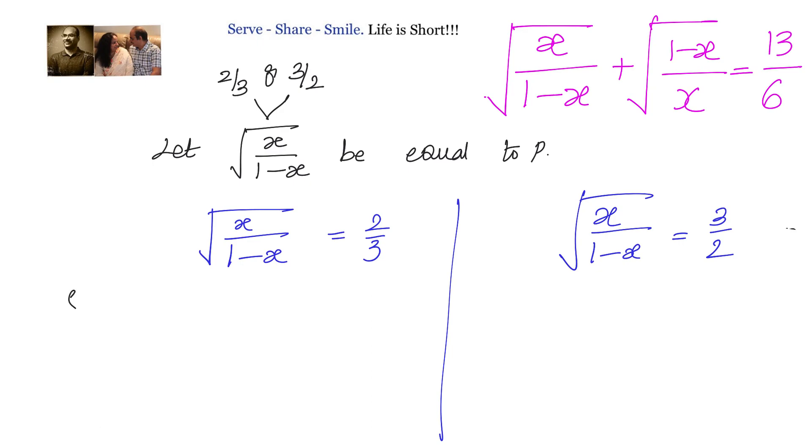We will square it on both sides. Squaring on both sides, we have x by 1 minus x equals to 4 by 9. We can do cross multiplication, we will get 9x equals to 4 minus 4x, or can I say that 13x equals to 4, x equals to 4 by 13. So one value of x we got, that is 4 by 13.